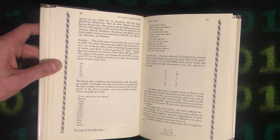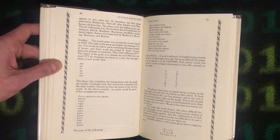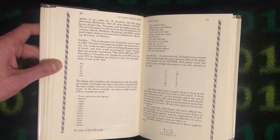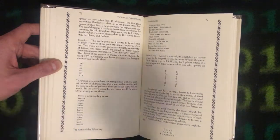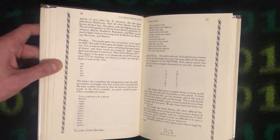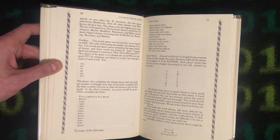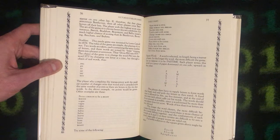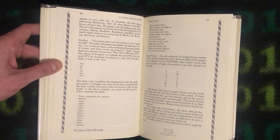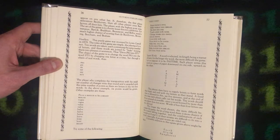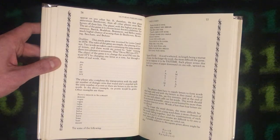Thus pig, pit, sit, sat, say, sty. The player who completes the transposition with the smallest number of changes wins that round and is awarded with the same number of points as there are letters in the two key words. In the above example, six points would be given. Other examples are these.